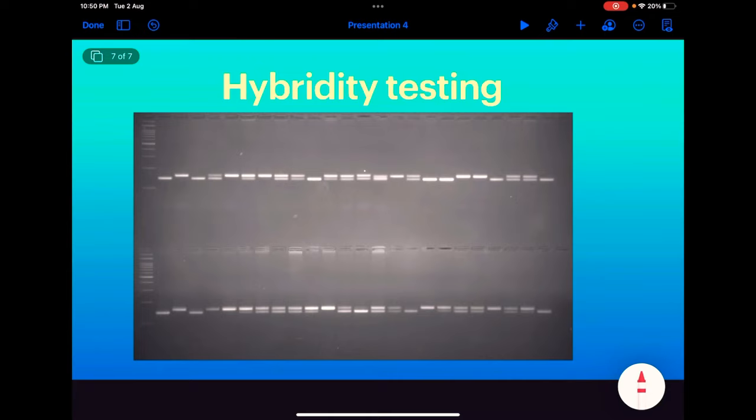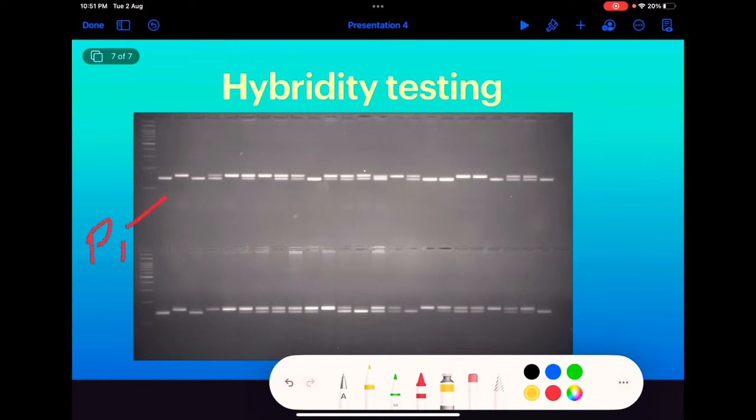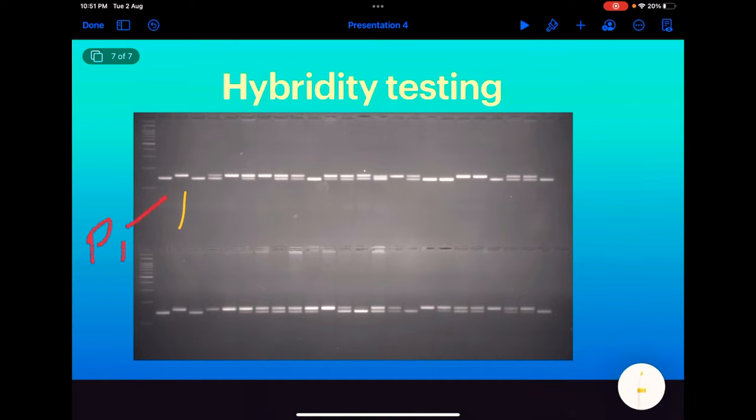Now in case of hybrid testing, we will take an example. Suppose we have two parents, parent one and parent two, and these are crossed to generate an F1 population. So how we will identify true hybrids from the F1 population? Suppose this is the allele of parent one and this is the allele of parent two, and rest is our F1 population. Let us consider this is a hundred base pair ladder, and our parent one allele is near about 150 base pair and parent two allele is near about 170 base pair.